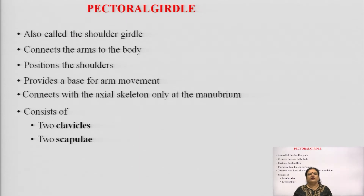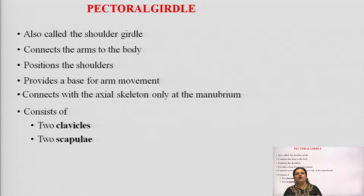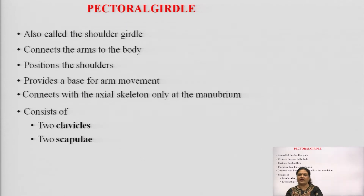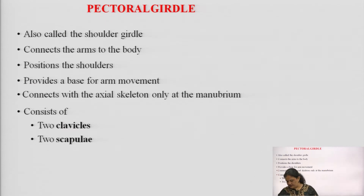The shoulder girdle provides a base for arm movement in any direction — extension, flexion. The pectoral girdle only covers the upper limbs of the body. It connects with the axial skeleton only at the manubrium. The pectoral girdle consists of two clavicles and two scapulae, which is the triangular-like structure present in the back of our shoulder, the posterior end of the body.